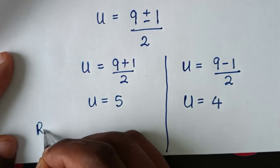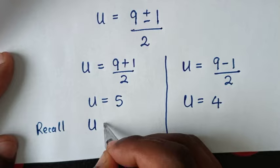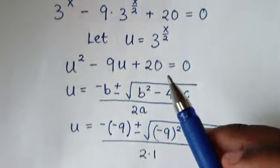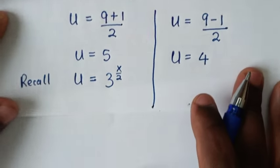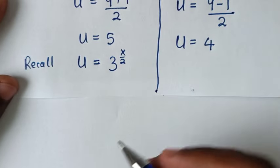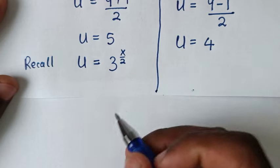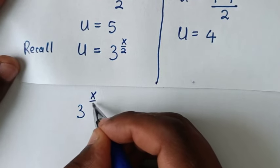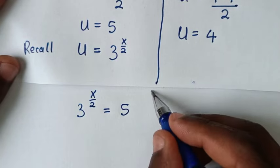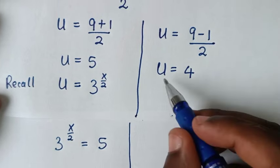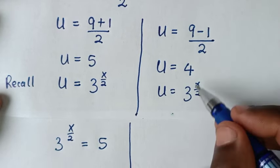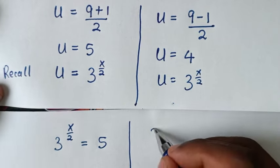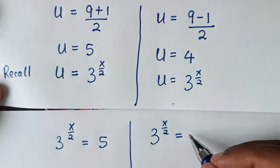Now we recall that we let u = 3^(x/2). Comparing with the two solutions: the first gives 3^(x/2) = 5, and the second gives 3^(x/2) = 4.